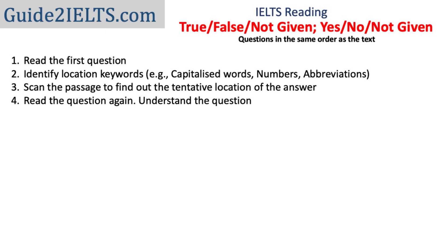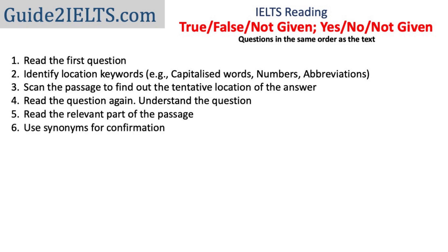Remember, the language of the question is usually simpler than the language in the passage. Go back to the passage and read the relevant part. You may need to read two to three sentences to figure out the answer. The information that is there in the question in one sentence could be spread over two to three sentences in the passage. And finally, use synonyms for confirmation — try to find synonyms in the text for as many words in the question as possible to confirm your answer.